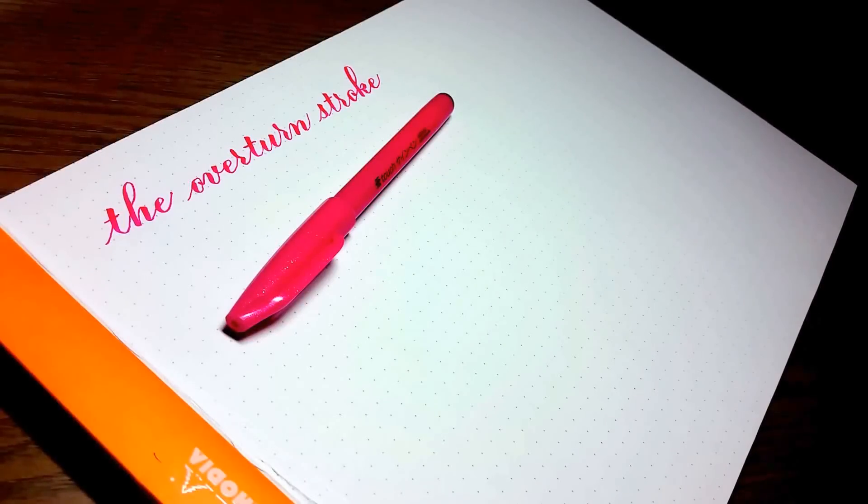Hi guys, Charisse here from Beasus Calligraphy. In this video we're going to review the overturned stroke. The overturned stroke is another basic stroke every brush calligrapher should know, and if you've been tuning in the past few weeks you've seen the other strokes in my basic stroke series, the entrance stroke and the underturn stroke.